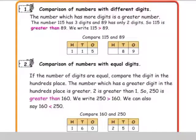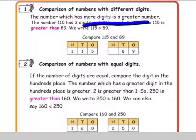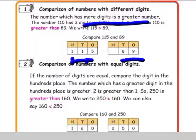Next, comparison of numbers with different digits. The number which has more digits is the greater number. Here 115 is a 3-digit number and 89 is a 2-digit number. So always a 3-digit number is greater than a 2-digit number. Therefore, 115 is greater than 89.